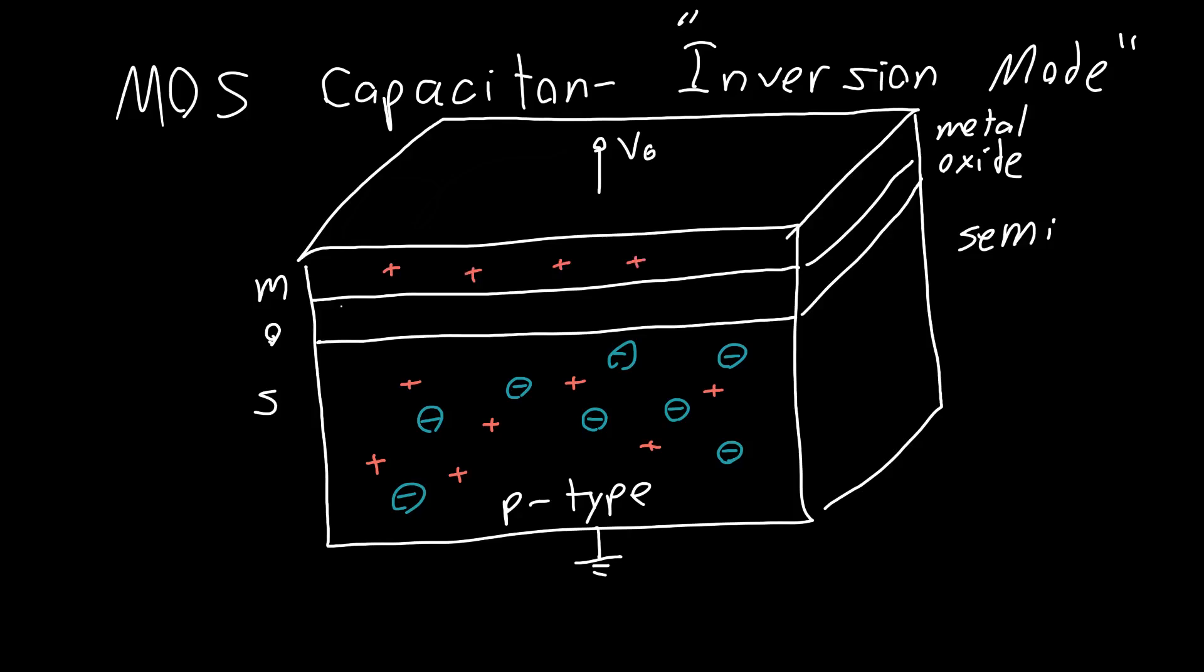We know that if we apply a voltage such that we start to add some holes to this metal, we're probably applying a positive voltage, then we're gonna start to scare away these holes in the semiconductor and they're gonna move into the bulk region, away from the interface. The things that we're left with are just the negatively charged ions.